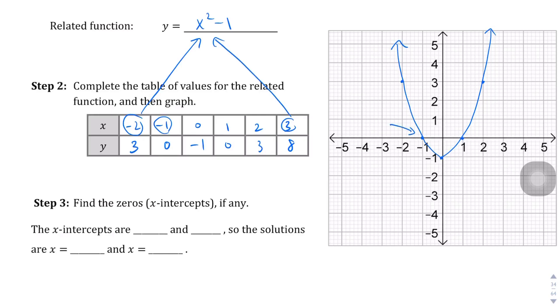Find the zeros or the x-intercepts, if any. There are two x-intercepts, one right here and one right there. The one on the left is negative 1, 0. And this one is 1, 0. So the x-intercepts are negative 1 and 1. The solutions are x equals negative 1 and x equals 1.